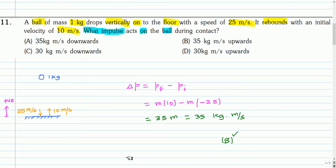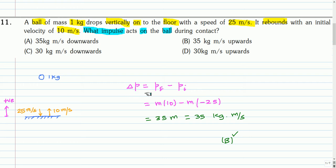Here is the solution. A ball of mass 1 kg is dropped on the floor. Before hitting the floor, the velocity is 25 meters per second. After hitting the floor, the velocity is reduced to 10 meters per second. The impulse is the change in momentum, which is the final momentum minus the initial momentum.